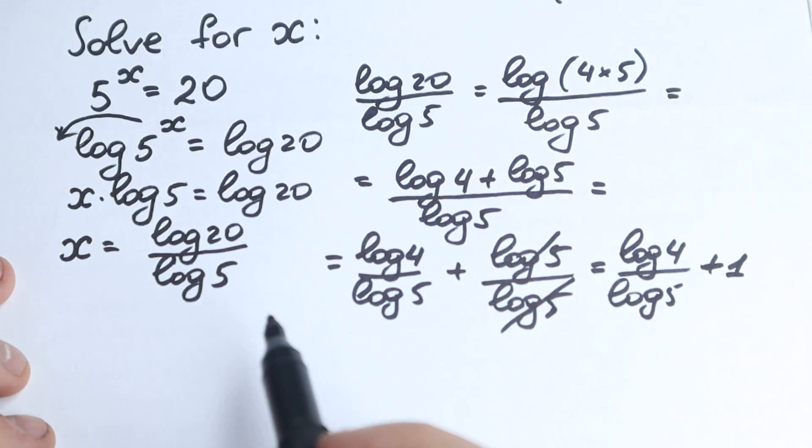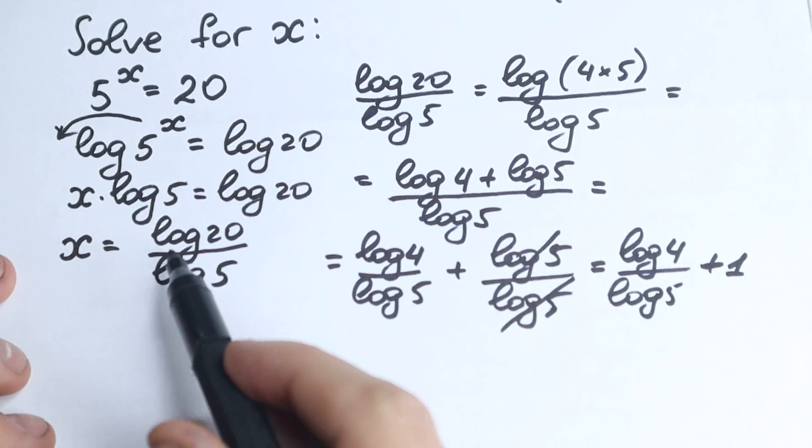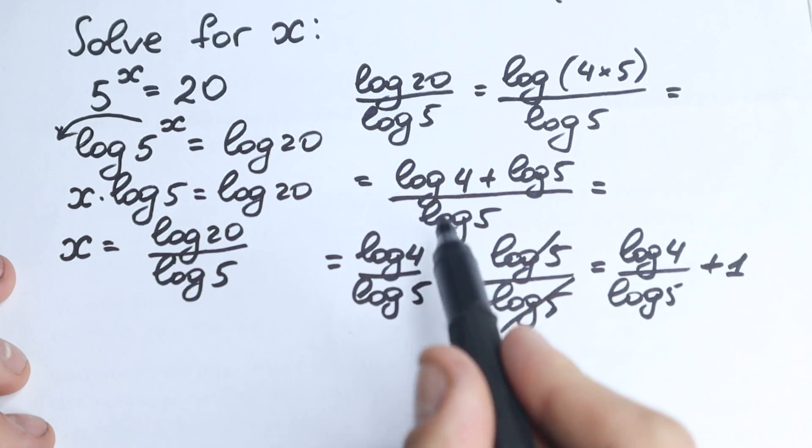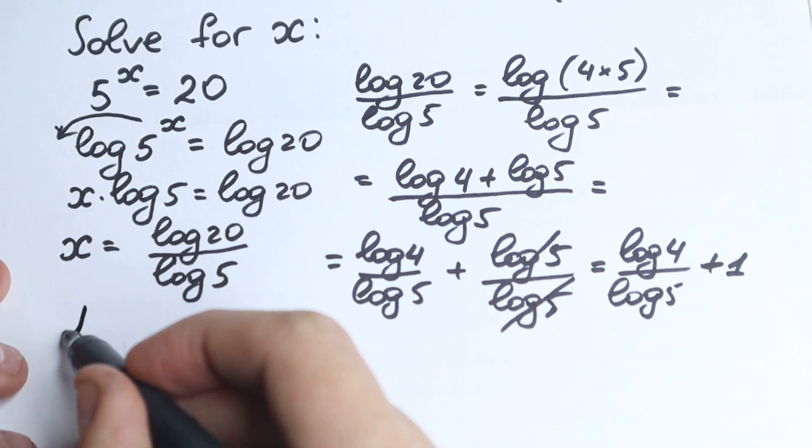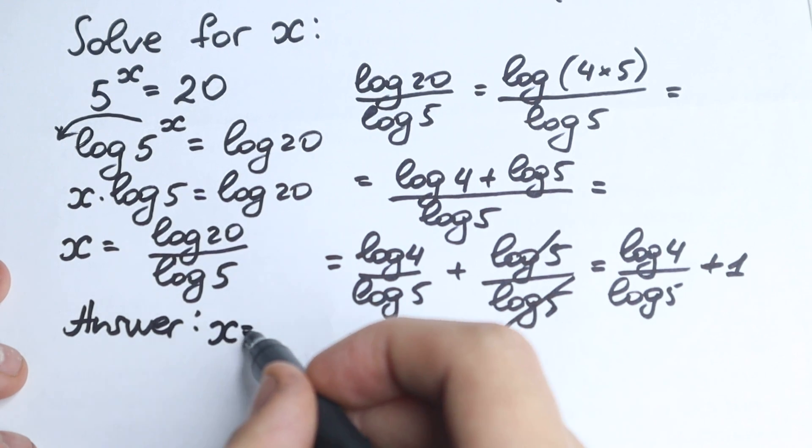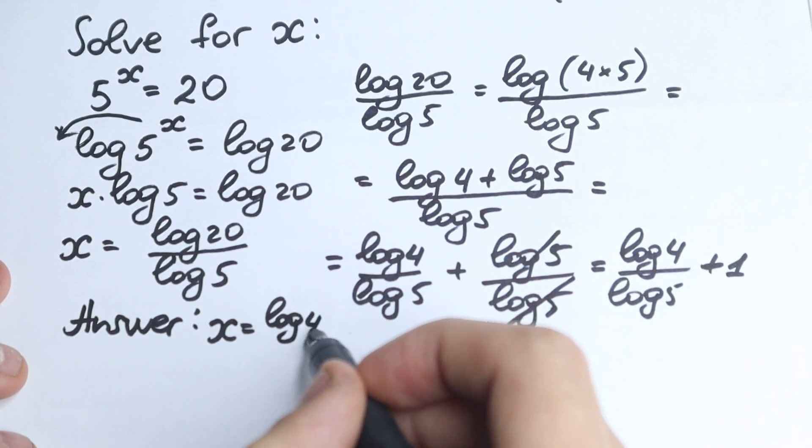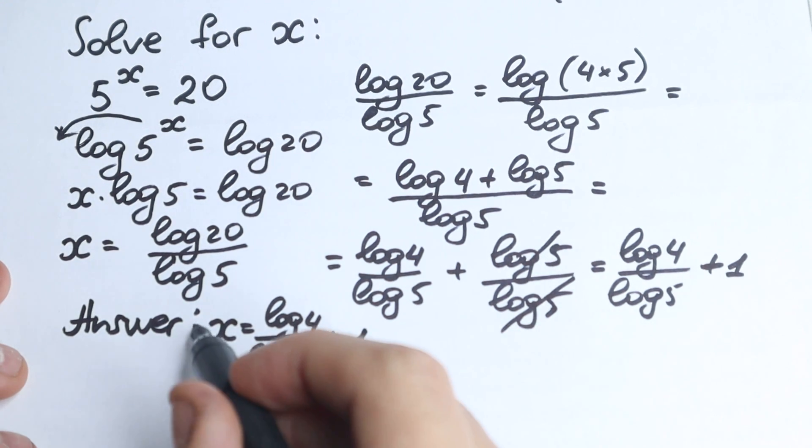We have log 4 over log 5 plus 1. This is a good answer because we simplified this. So let's write our answer: x equals log 4 over log 5 plus 1. This is our answer. I hope you understand this.